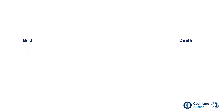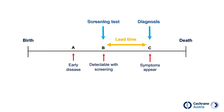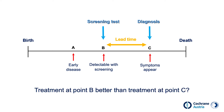Let's look at a graph. The line represents life from birth to death. At time A, a disease develops and is not yet detectable with tests. At time B, the disease is detectable with a screening test. At time C, symptoms appear and the disease can be detected by the doctor through these symptoms. Lead time is the period between early diagnosis by screening and diagnosis based on symptoms. The crucial question, however, is: does treatment at point B lead to a better result than treatment at the later point C? This is not always the case. Sometimes, it is lead time bias that just makes it look like early treatment is better than later treatment.